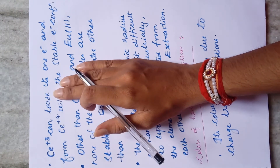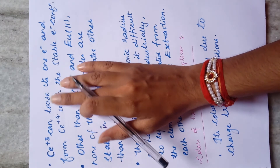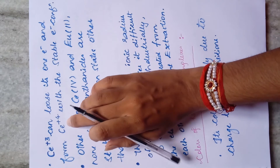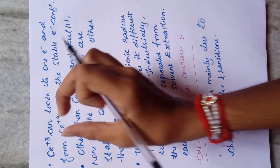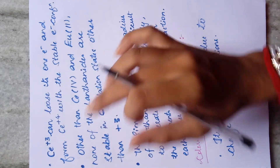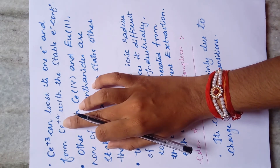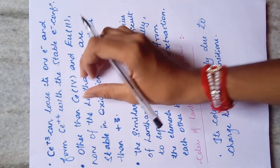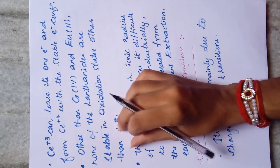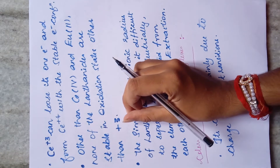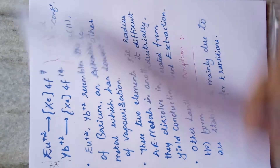The +4 oxidation state is exhibited by four to five lanthanide elements. Among them, cerium(IV) — ceric salts — is very stable and prefers +4 over +3. Other than cerium(+4) and europium(+2), none of the other lanthanides are stable in oxidation states other than +3. The most stable exceptions are Ce⁴⁺ and Eu²⁺.